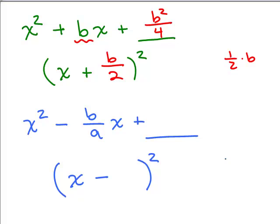If you can't do that in your head, write it over here. What's 1 half of B over A? It's B over 2A. So then what would go up on the blank? Square the numerator and square the denominator. We're going to have B squared over 4A squared.